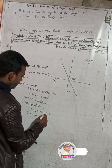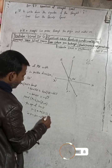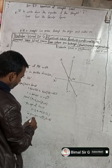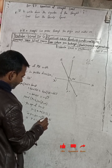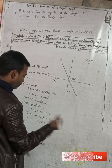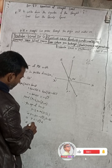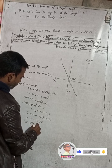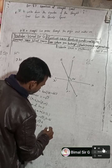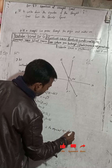So Y = minus root 3 times X. Rearranging: root 3X plus Y = 0. This is the required equation of the line.